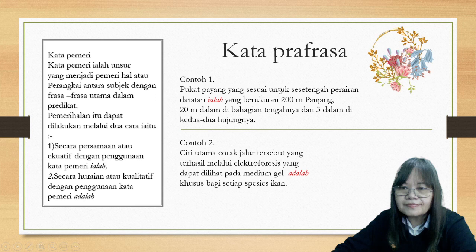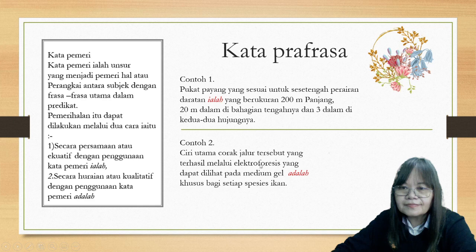Contoh satu: Pukat payang yang sesuai untuk sesetengah perairan daratan ialah yang berukuran 200 meter panjang, 20 meter dalam di bahagian tengahnya dan tiga meter dalam di kedua-dua hujungnya. Ini ialah contoh bagi kata pemeri jenis secara bersamaan ataupun ekuatif. Nombor dua, iaitu secara huraian ataupun kualitatif, dengan penggunaan kata pemeri 'adalah'. Contohnya: Ciri utama corak jaruh tersebut yang terhasil melalui elektroforesis yang dapat dilihat pada medium gel adalah khusus bagi setiap spesies ikan. Ini adalah secara huraian ataupun kualitatif.